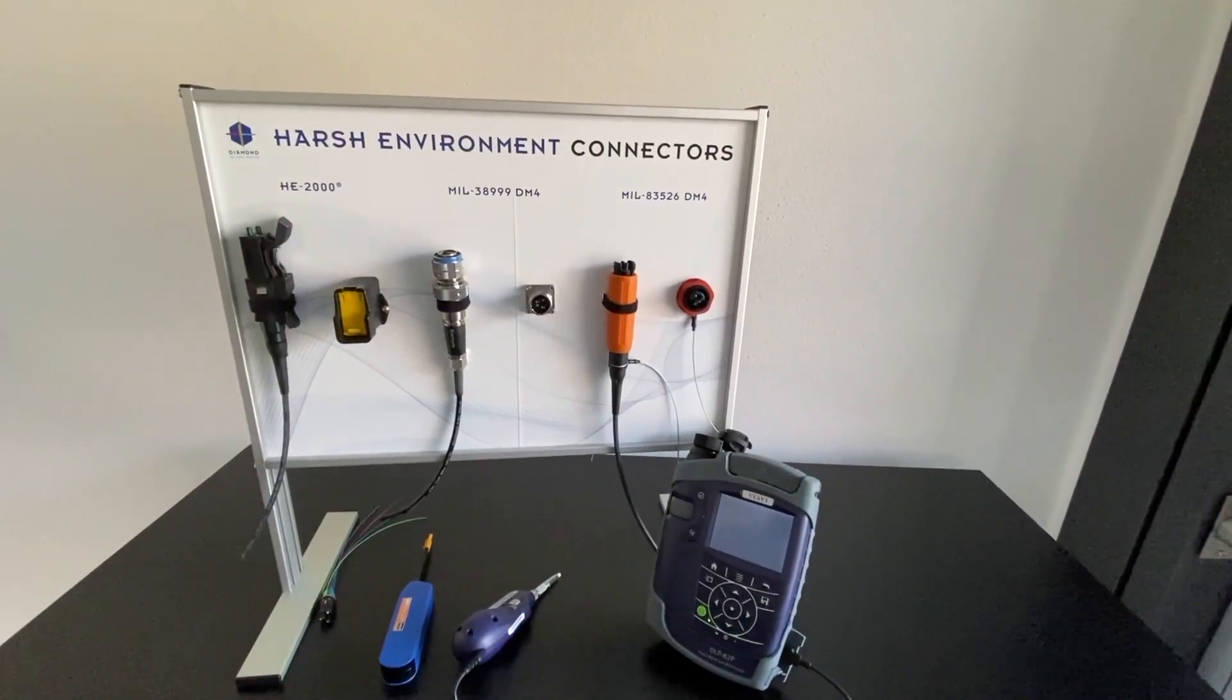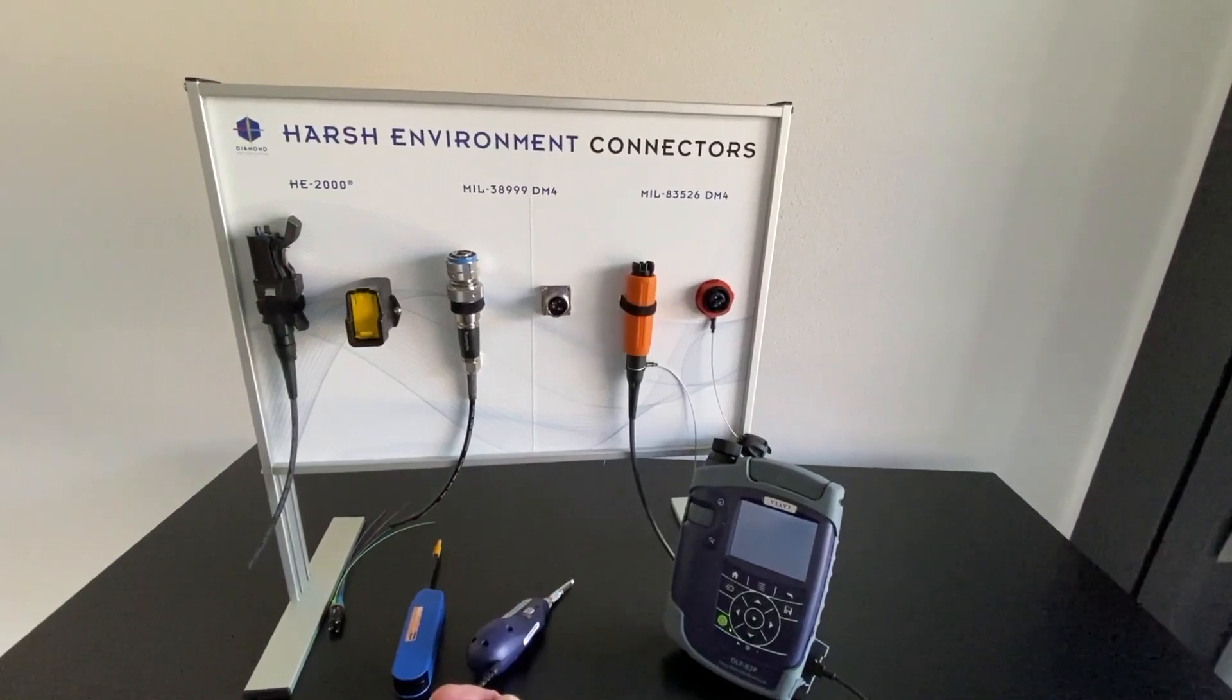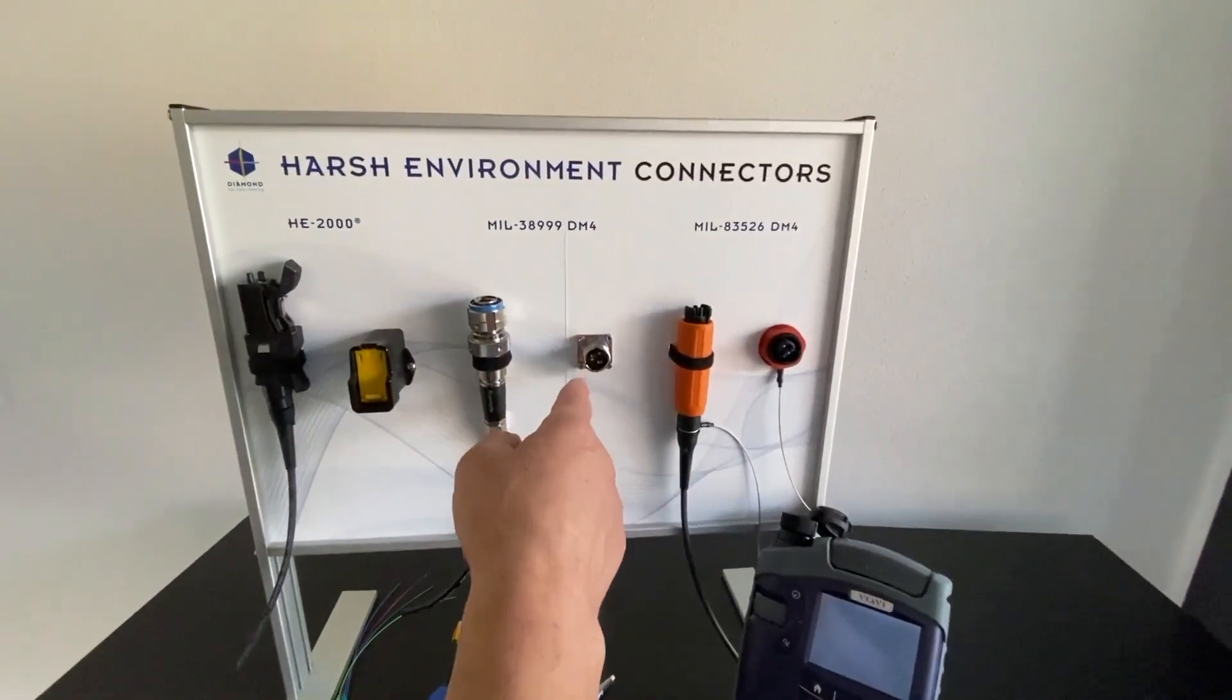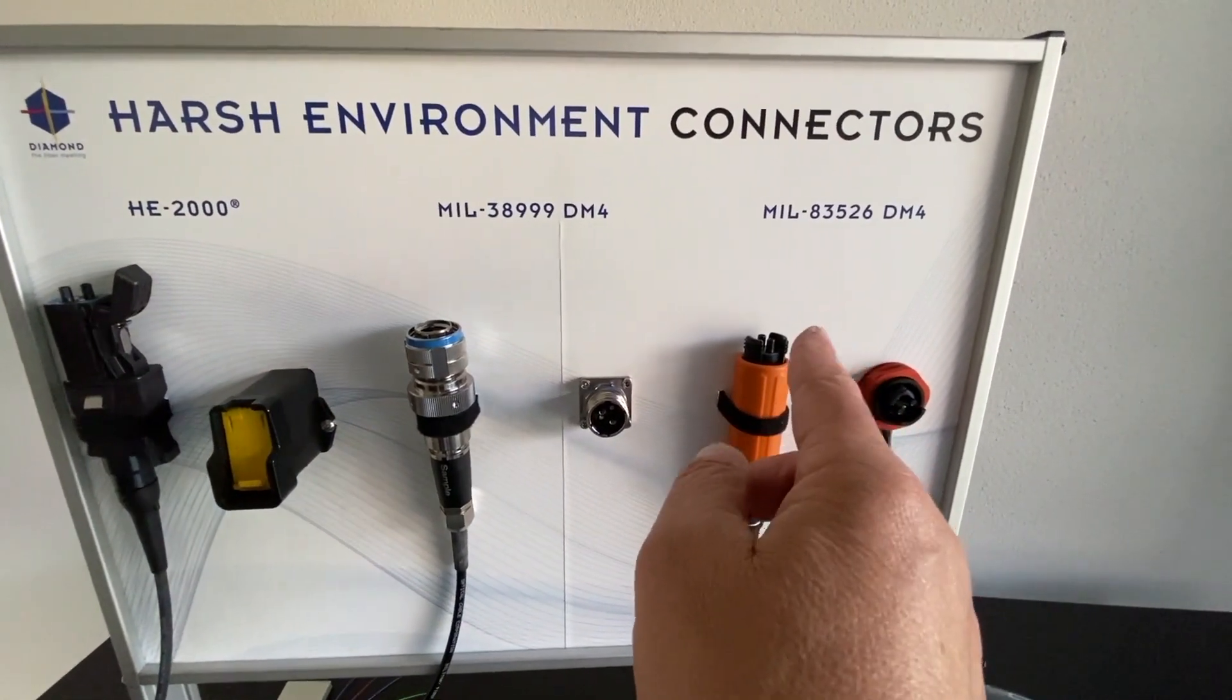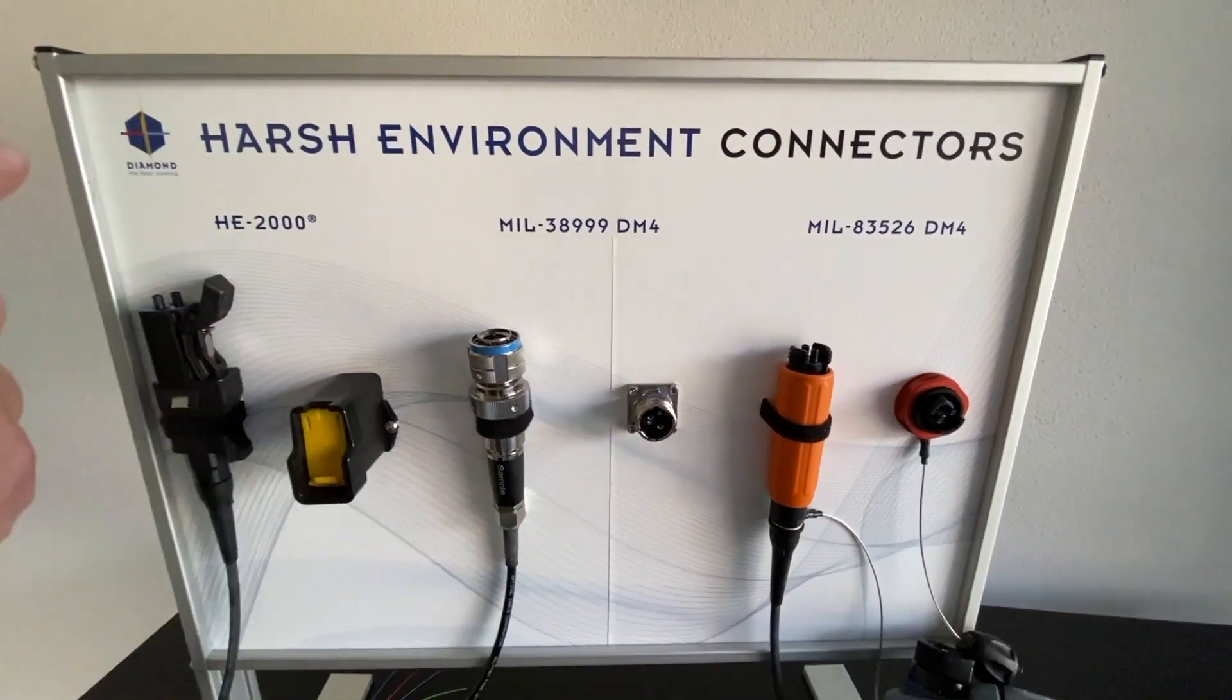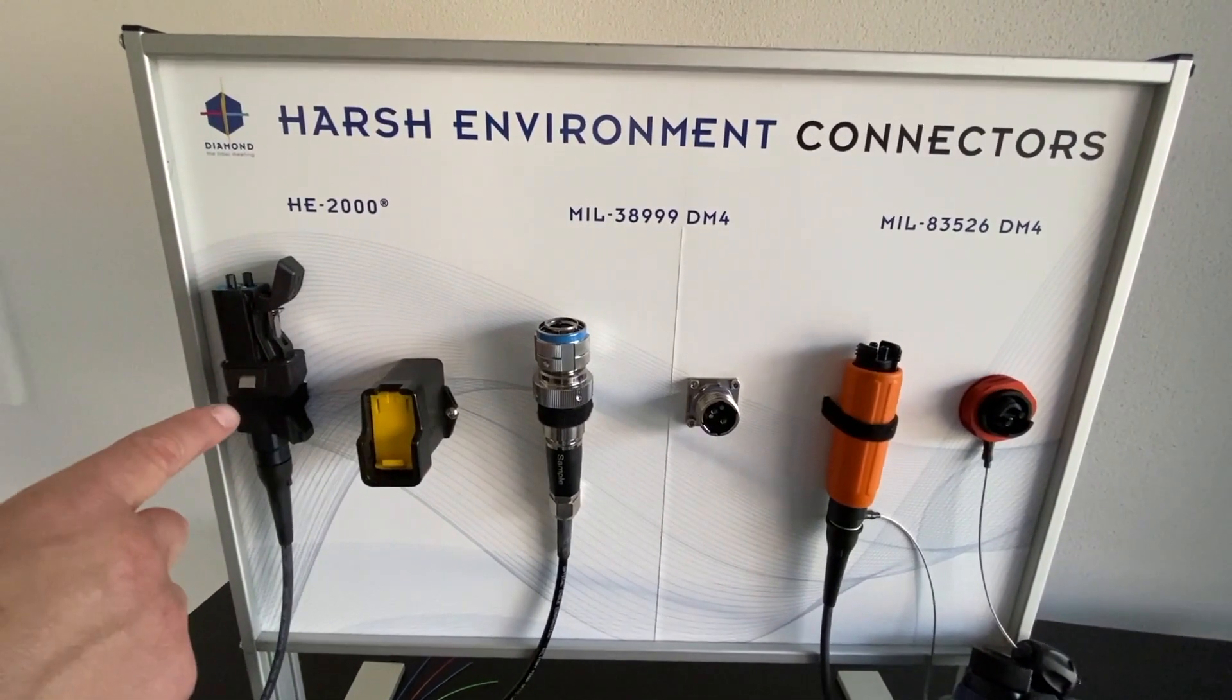I will now show you how to inspect and eventually clean the bulkhead 38999 connector. The same method would be for the 83526 and for the HE2000 connector.